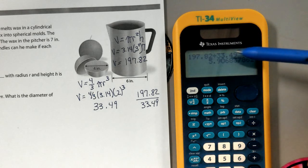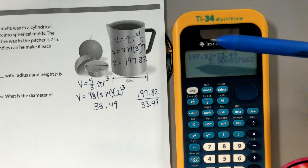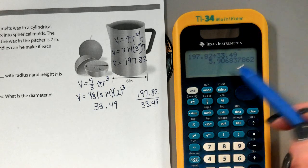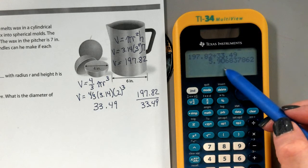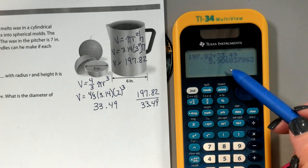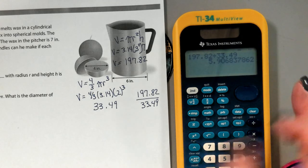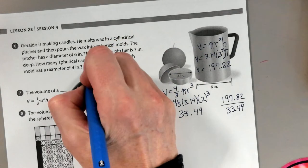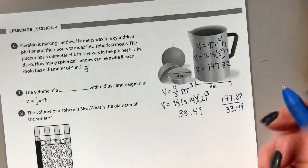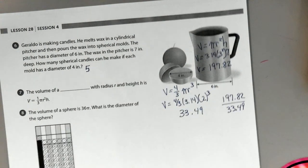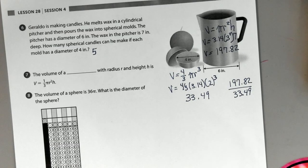Since we're making whole spherical candles, we can't round up — we don't have enough wax for the sixth candle. So Raldo can make 5 candles. We have to round down here.